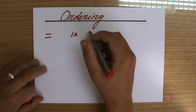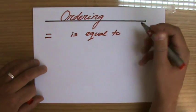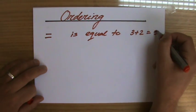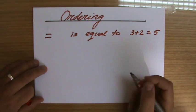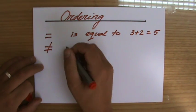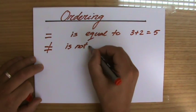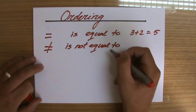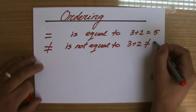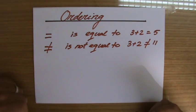It means is equal to. So for instance, three plus two is equal to five. And then we have a symbol which looks like this and that means is not equal to. So we could say for instance three plus two is not equal to eleven. Yeah, I think so far everything is good.